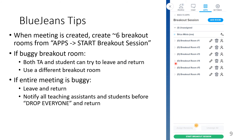When a BlueJeans meeting is first created, it is important for teaching assistants to create approximately six breakout rooms using the Apps and Start Breakout Session button. Essentially, you go to Apps, then click Add Room six times, and then click the Start Breakout Session button. If you encounter a buggy breakout room, you can have both the TA and student try to leave and return. Or if that doesn't resolve the bugs, you can simply move to a different breakout room, which is often the solution. If the entire meeting seems buggy, you can leave and return, and if that still doesn't resolve it, you can notify all teaching assistants and students before dropping everyone and then returning to the meeting.